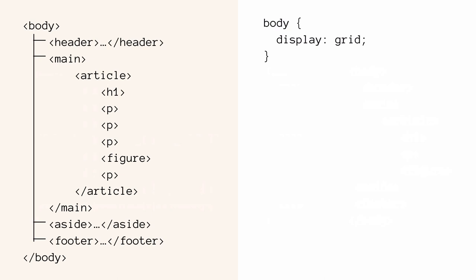Everything else — like the article, the H1, the P, the figure — those are grandchildren or great-grandchildren of the grid container, so they cannot be placed on this particular grid. If we put a grid on body, only the header, the main, the aside, and the footer can be placed on that grid. This is very different from the mental models we've had with tools like 960.gs, Foundation, or Bootstrap — those systems had one grid applied to the entire website all at once. This is not like that at all.